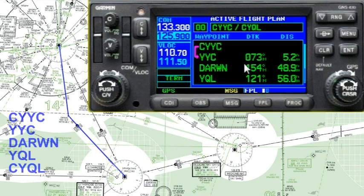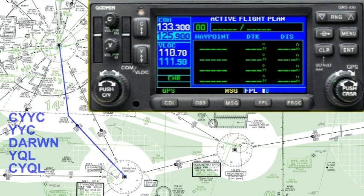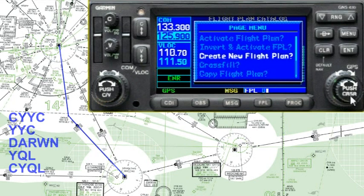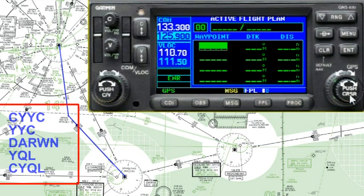To delete a flight plan, hit menu and select delete the flight plan, enter, enter again — it's gone. Now we're going to build a flight plan. I'm going to build it right here in flight plan zero, but you can also build flight plans in the flight plan catalog page. If you come over there and hit menu, 'create a new flight plan' is one of the options. But I'm going to do it right here.